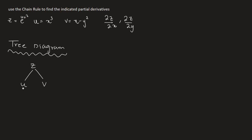Then u is a one-variable function of x. So u is a function of x. And then v is a function of both x and y. So v is a function of x and v is a function of y as well. I hope you got how to draw the tree diagram.